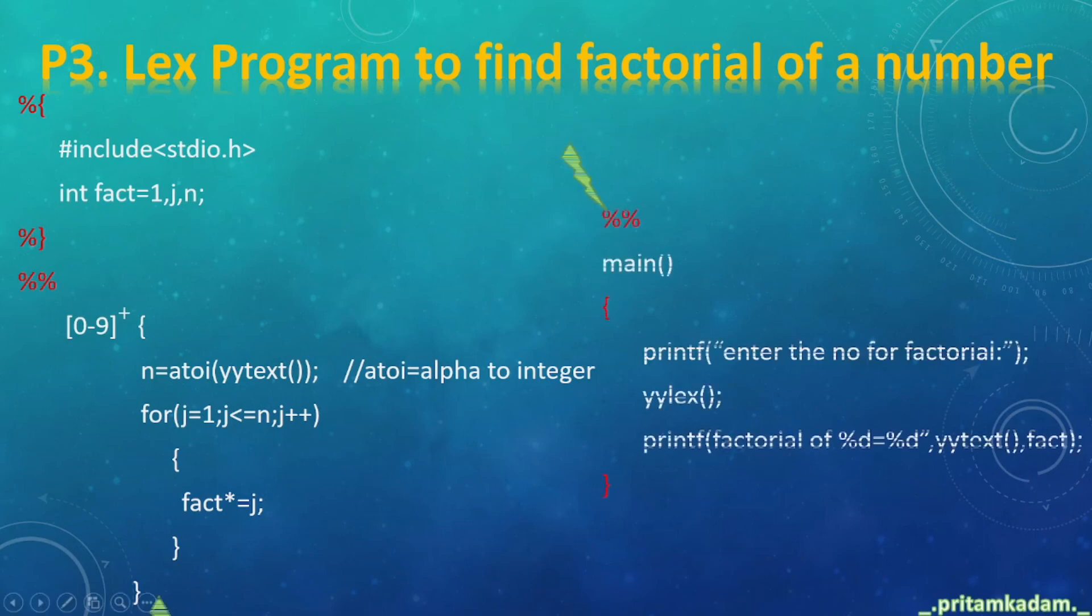Now we have to write the third section of main: printf enter the number for factorial and yylex to start scanning. Then it went to that action and pattern section, and then afterwards I have written printf factorial of the specified number equals to %d, %d is the value of the fact variable.